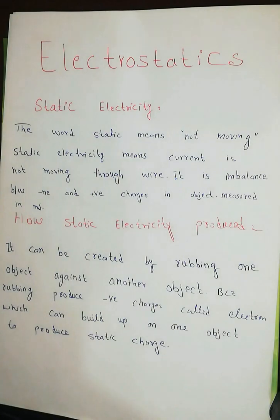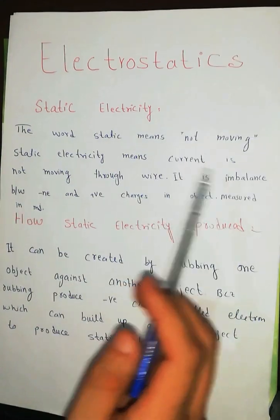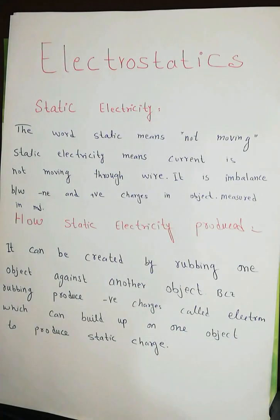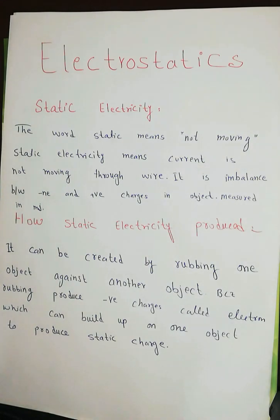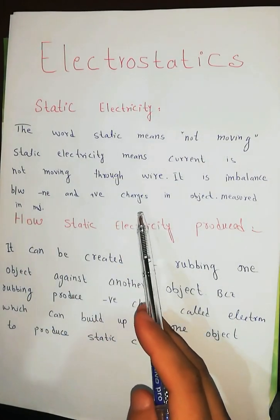First, we have to understand what static electricity is. The word 'static' means not moving. Static electricity means the current is not moving through a wire — it is not produced through a wire, and it is not available from a battery source. Static electricity is an imbalance between negative and positive charges in an object.